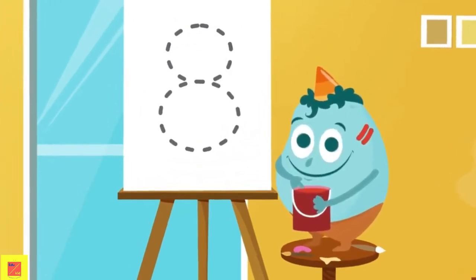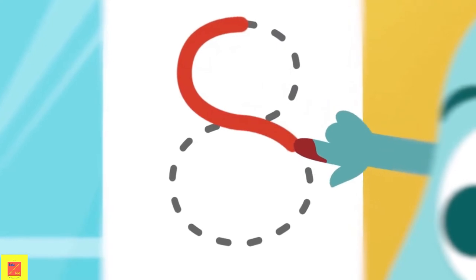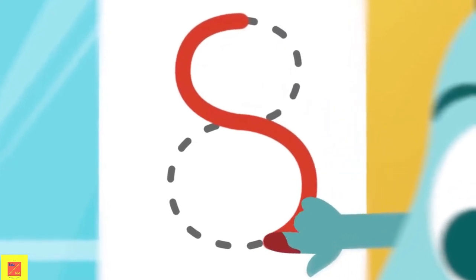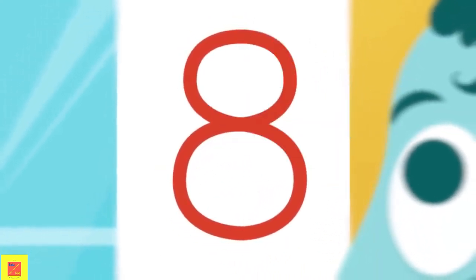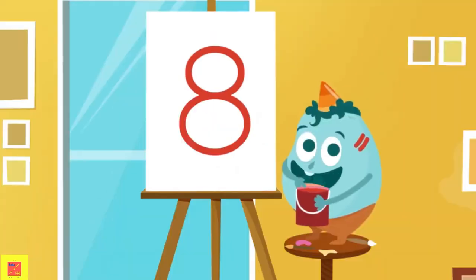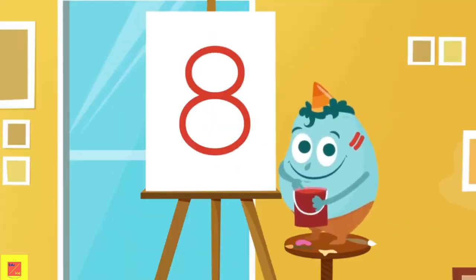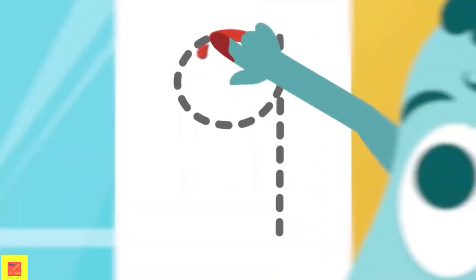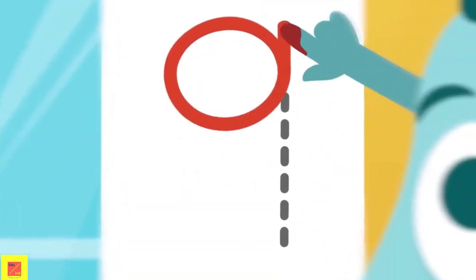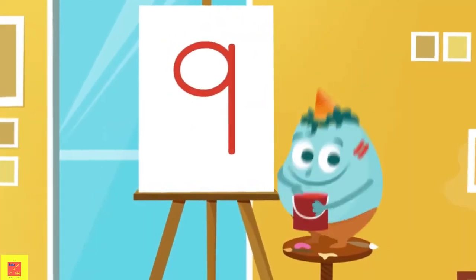Let's look at this one. Here we make a small curve, then another one this way, and then we go up and do the same thing. And this number is? Number 8! That's it! For the next number, we have to make a circle up here, and when we finish that, we go straight down. What number is it? Number 9!